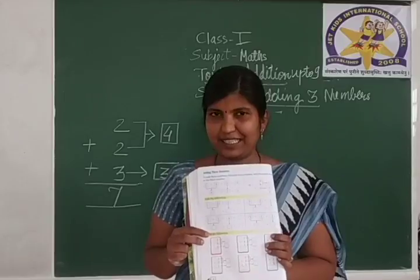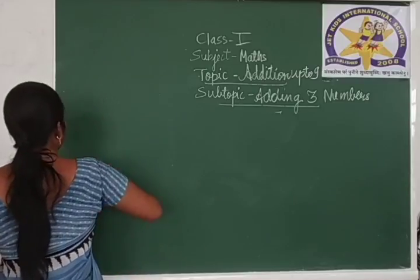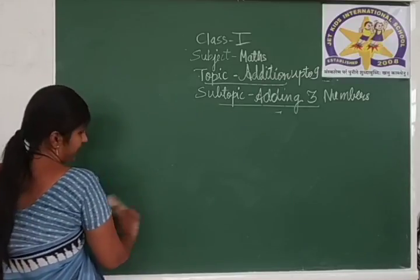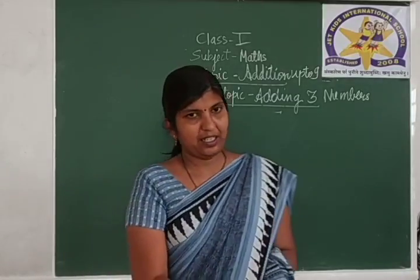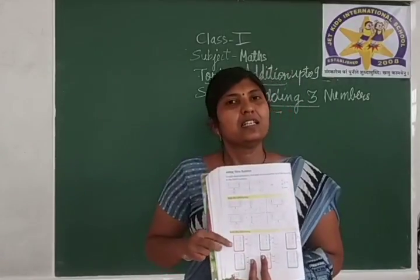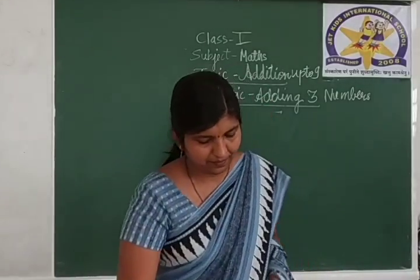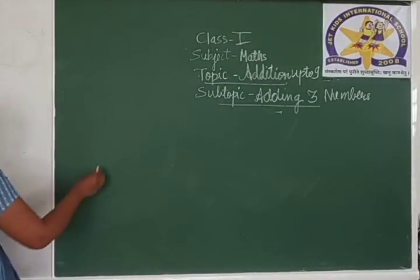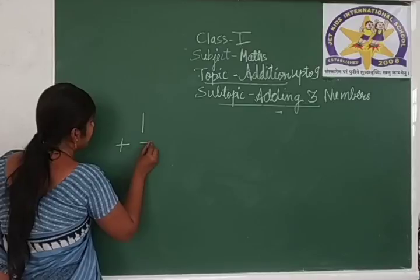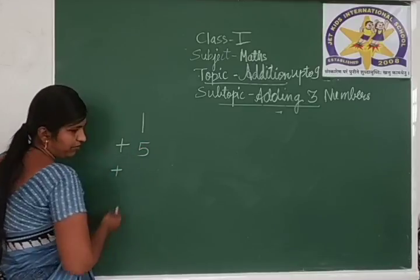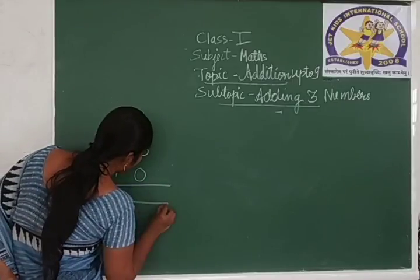Now here is an exercise also. We will solve 2 examples here. See the exercise in your textbook on page number 34. Some additions are given vertically. We will see the first one: 1 plus 5 plus 0. Again we have 3 numbers to add.